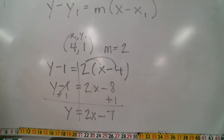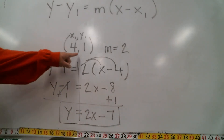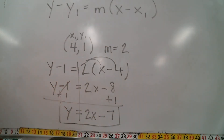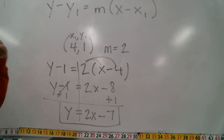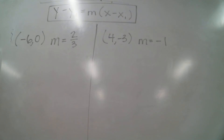I could graph this line, but I'm not asking you to do that today. We've taken the point and the slope and turned it into slope-intercept form, so we could identify or graph the line. Go ahead and copy down these practice problems. I've left the point-slope formula up here so we can follow along with it.